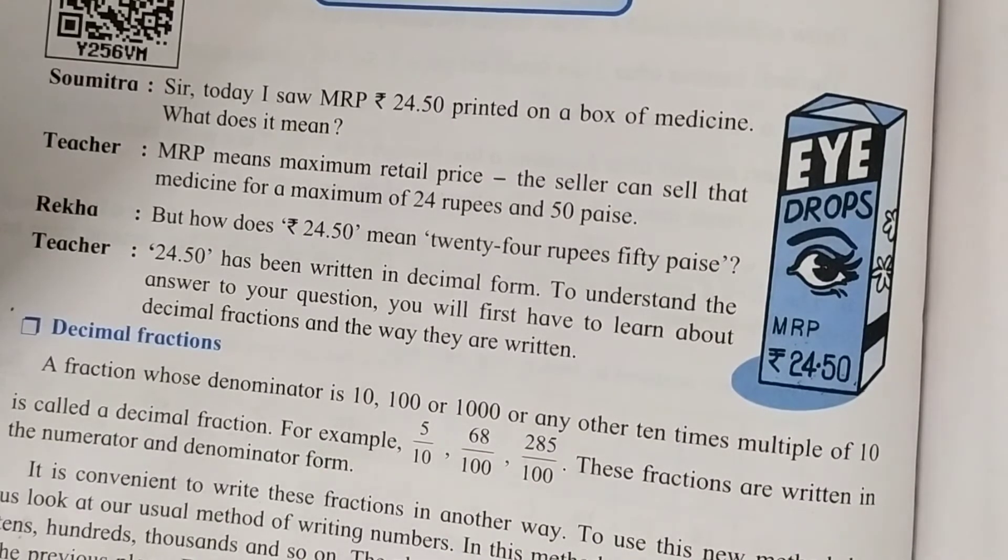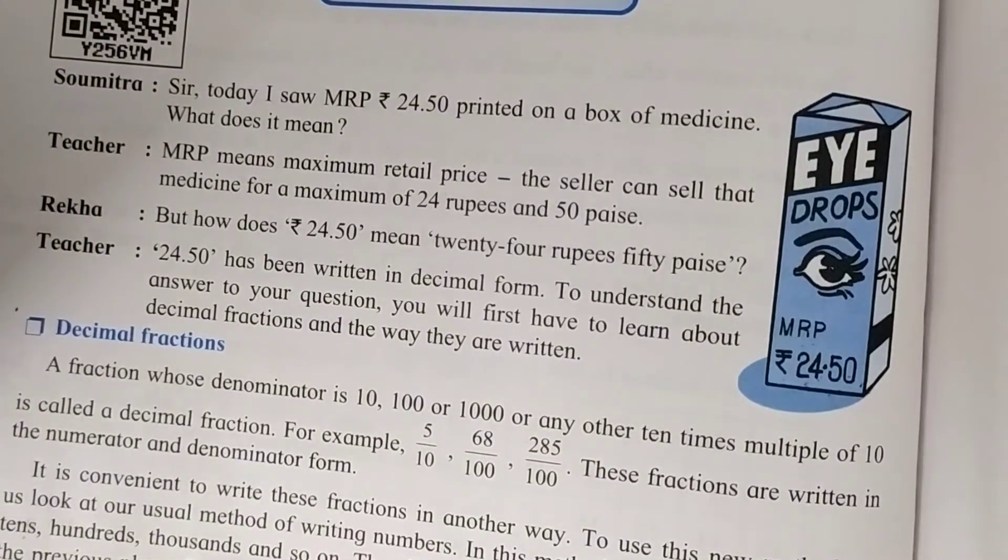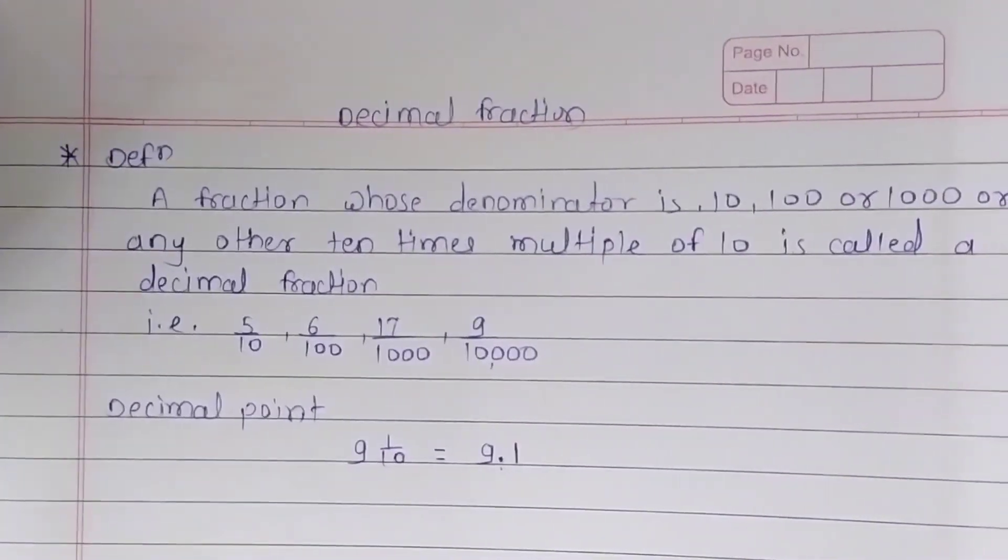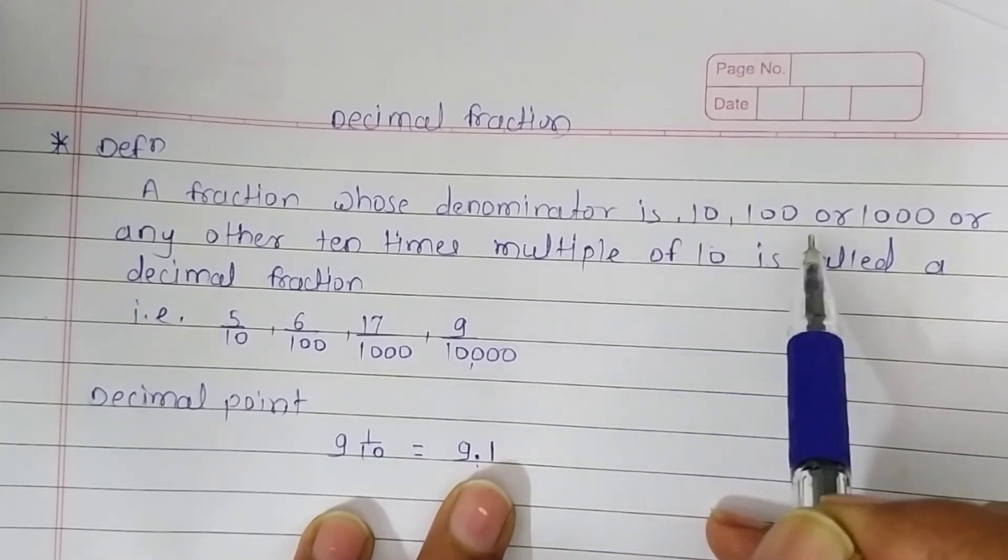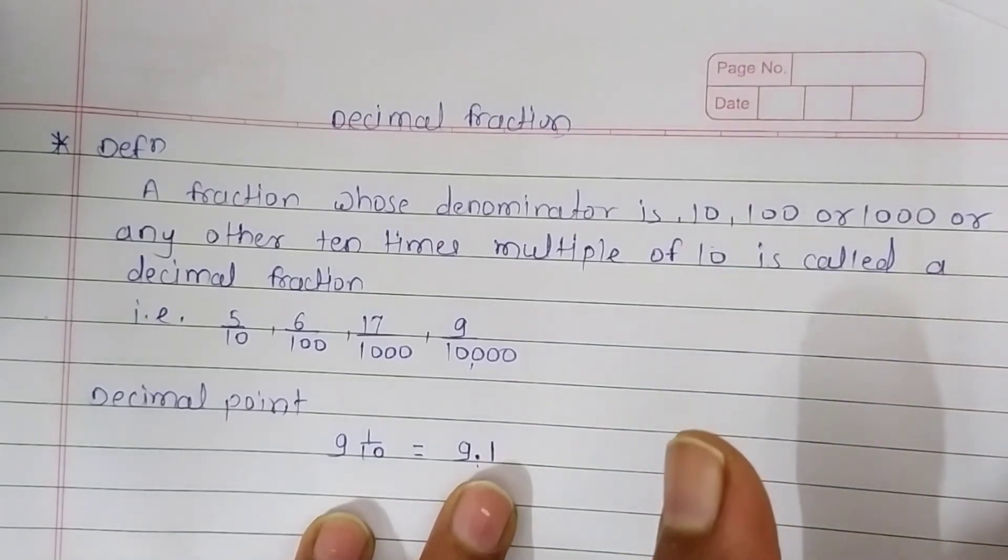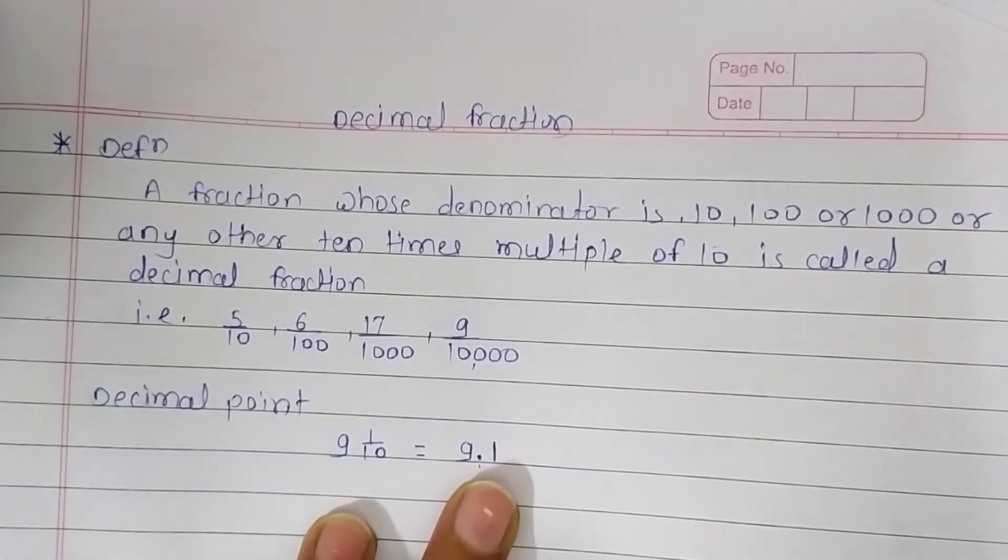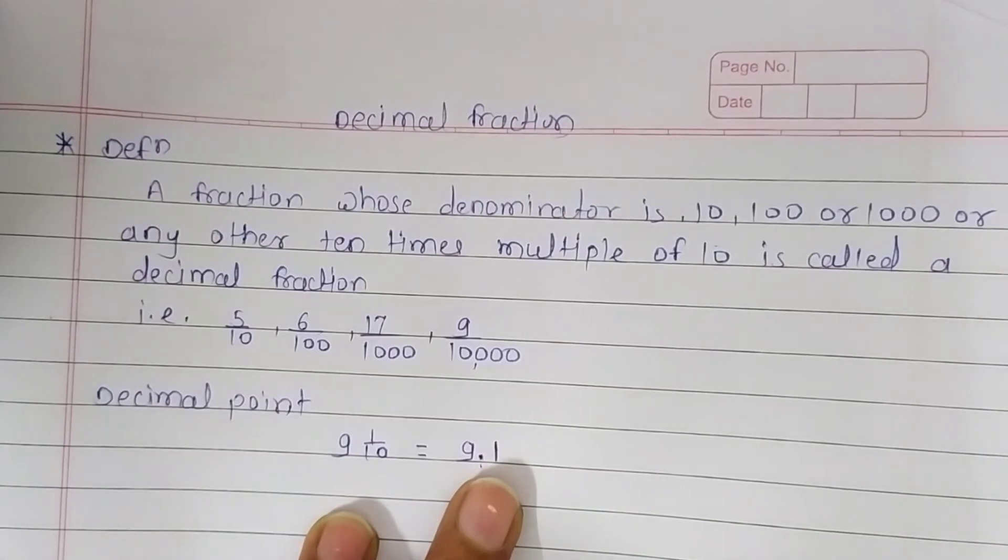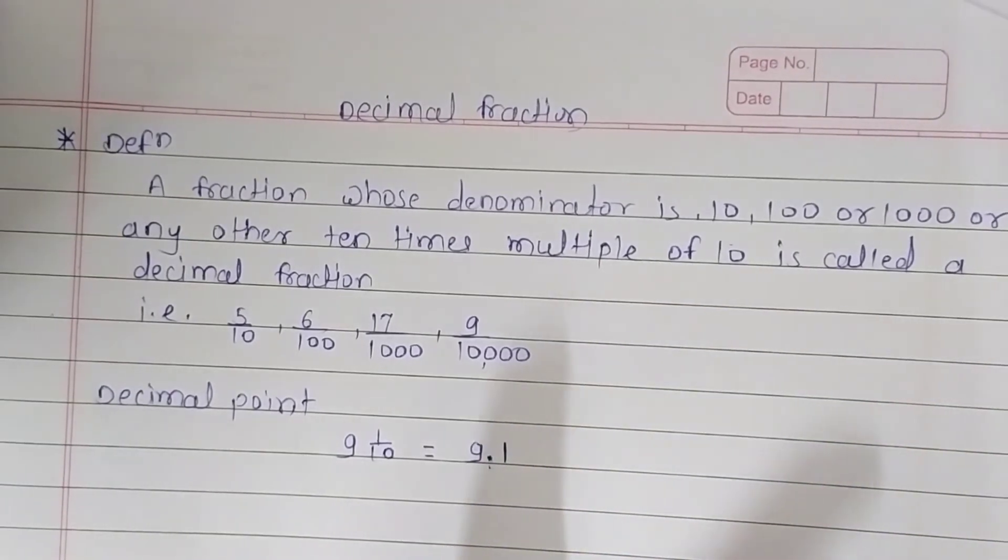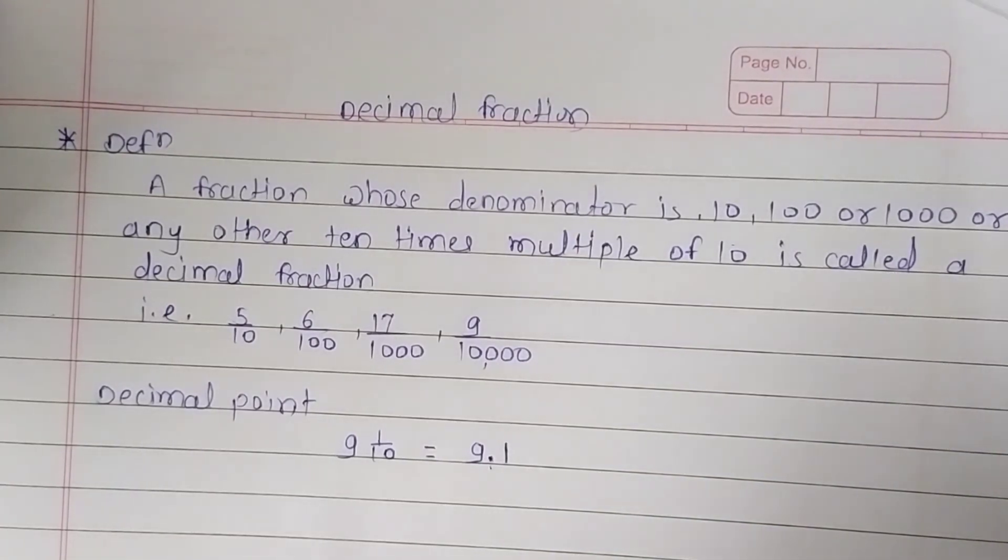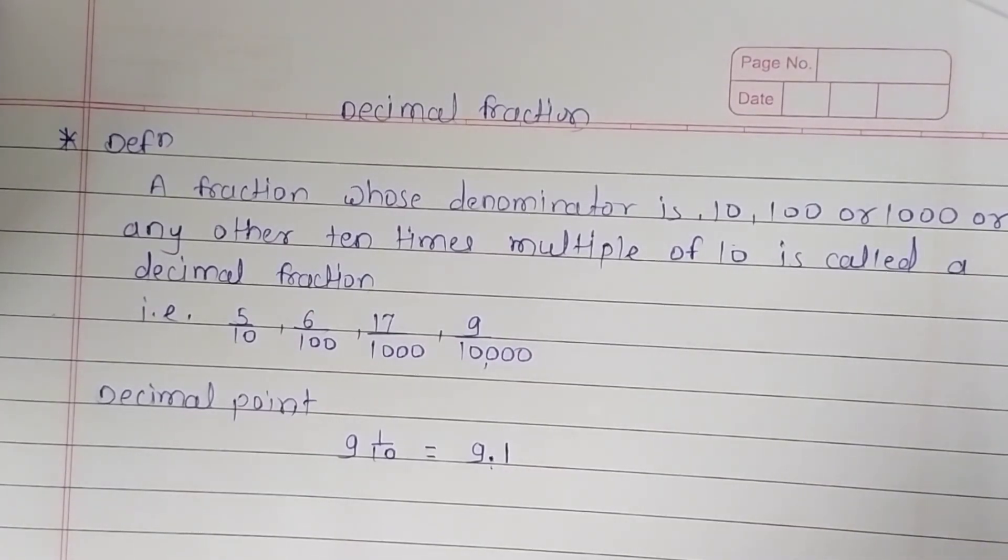Hope you understand. Now in the next video, we are going to solve problem set 36. You have to recite the definition of decimal fraction. Just remember that decimal fractions' denominator has 10, 100, or 1000, or any other 10 times multiple of 10. We have to look at the denominator. If we get any fraction, to identify if it is a decimal fraction or not, we have to look at the denominator side.